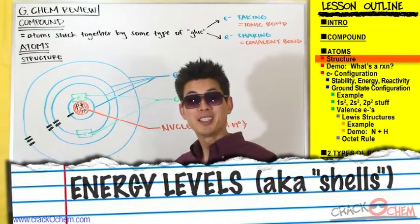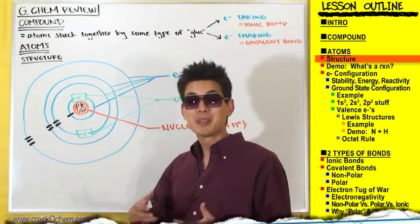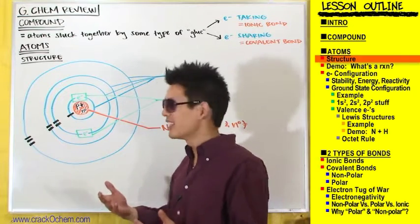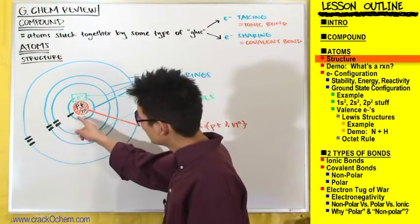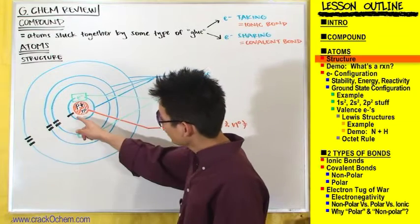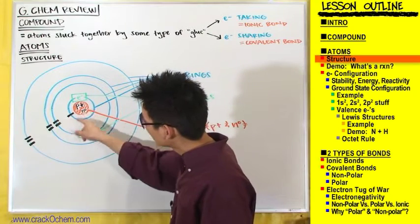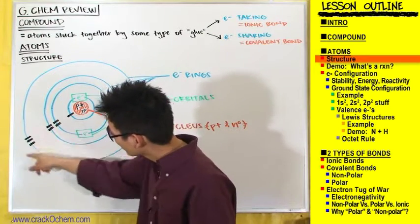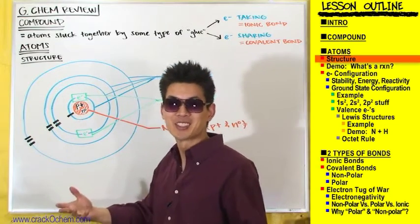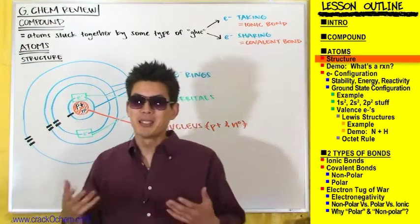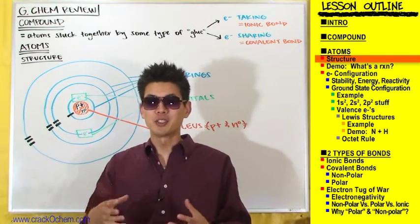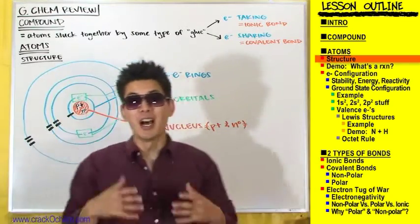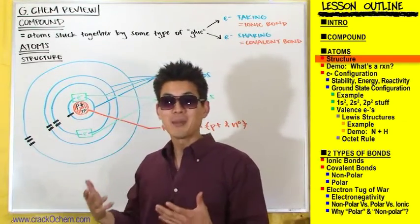The last major component to this diagram is something called energy levels, represented here with these black hash marks. The first energy level gets one black hash mark, the second gets two, the third gets three. The idea here is that energy levels are collections of electron rings of about the same energy.